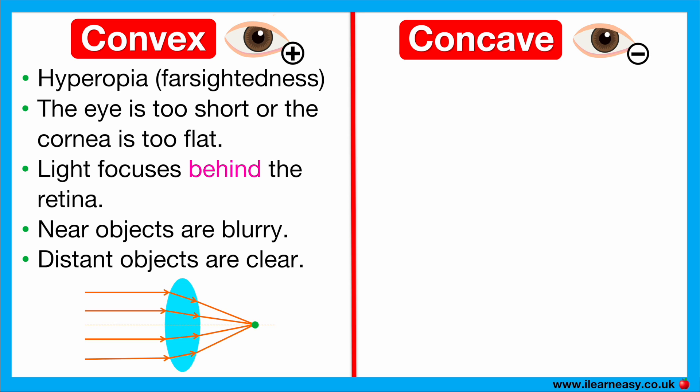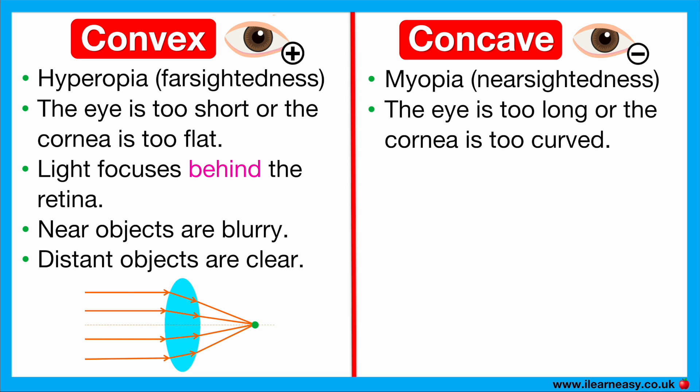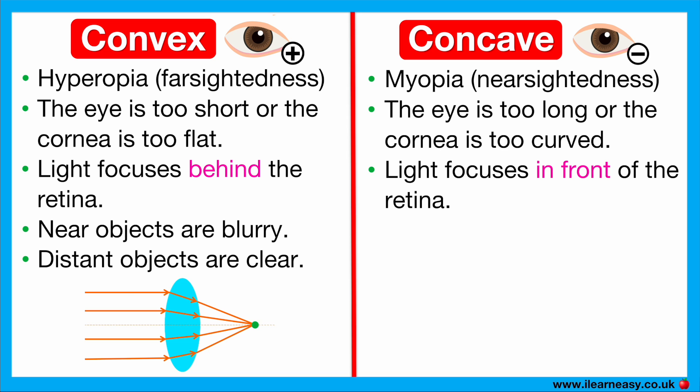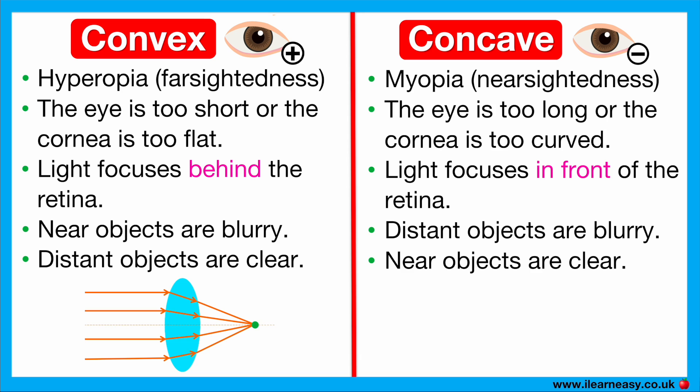Concave lenses are used for myopia, also known as nearsightedness. The cause of myopia is that the eyeball is too long or the cornea is too curved, so light focuses in front of the retina. This results in distant objects appearing blurry, but near objects appearing clear.